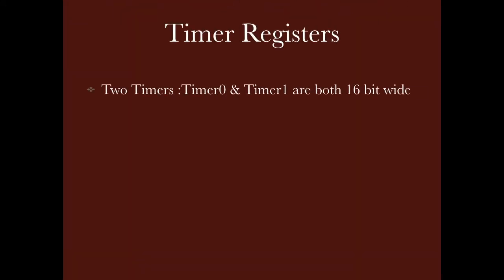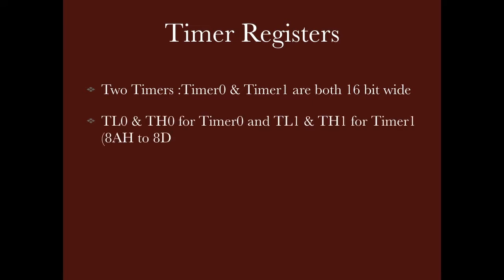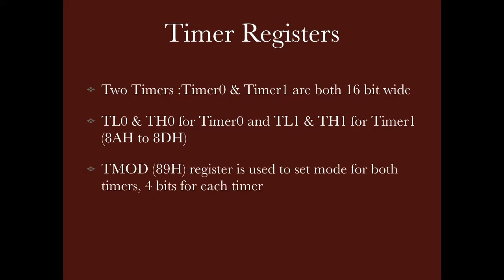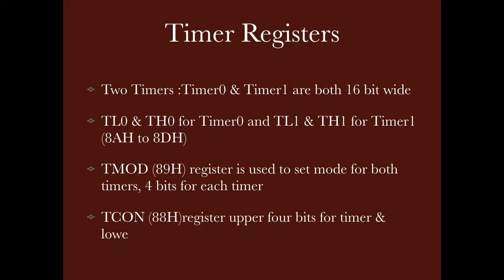Now we come to timer registers. There are two timers — timer 0 and timer 1 — and both are 16-bit timers. This is why we have two registers each: TL0, TH0 for timer 0, and TL1, TH1 for timer 1. Their addresses are 8AH to 8DH. Then we have the TMOD register — the timer mode register — which uses 4 bits for each timer. We also have the TCON register — timer control — at 88H. The upper 4 bits are used for timer control and the lower 4 bits for interrupt control. We will discuss timers in detail in a specific video.